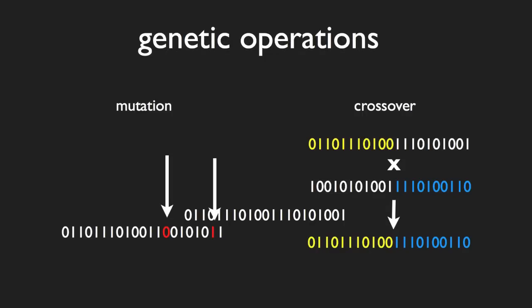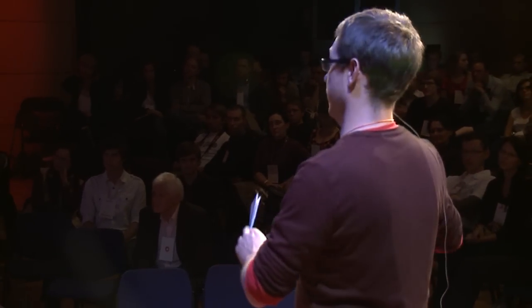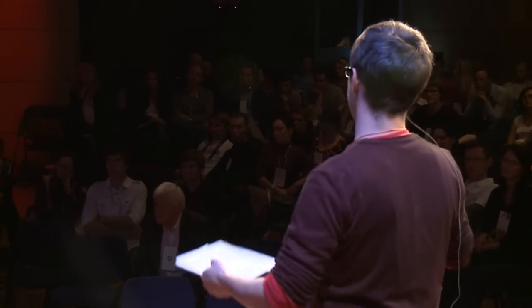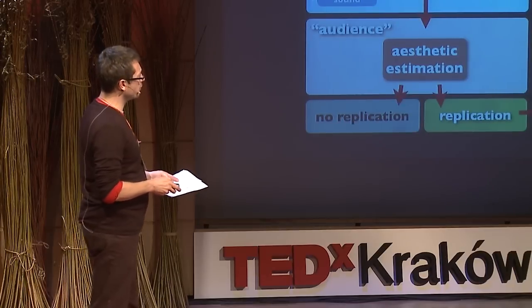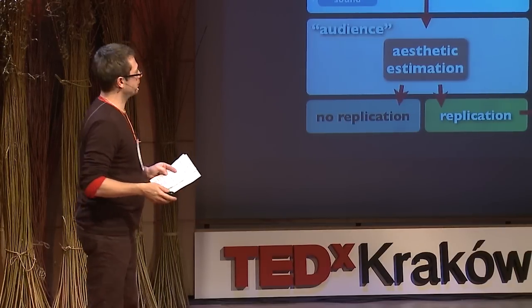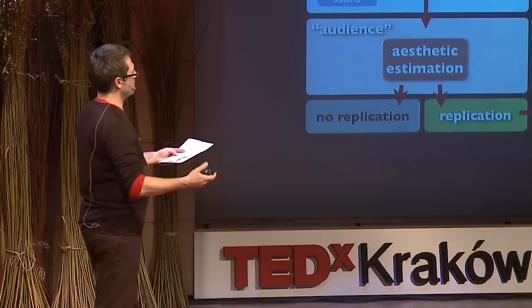Now we are ready to take any programming language and create a simple homemade model of evolution. The population of individuals becomes a set of musical ideas. The fitness is tested in the environment. In music, the audience performs aesthetic evaluation of a particular idea. If the fitness is low, the genes die. Otherwise, the genotype replicates and the whole evolutionary cycle repeats. In music, we would rather talk about the combination and transformation of ideas — this is how parents create offspring and the next generation of individuals appears.